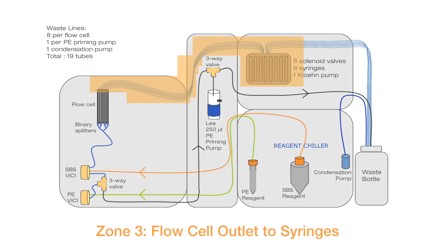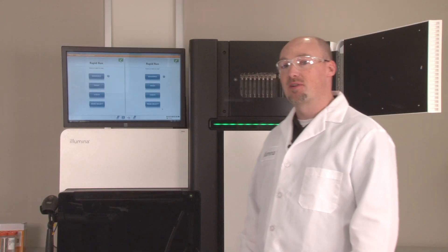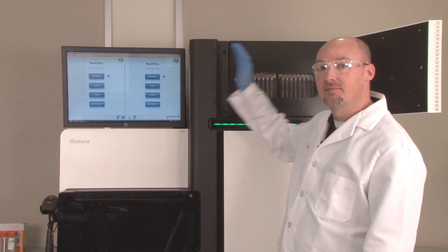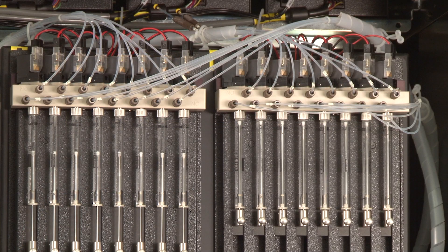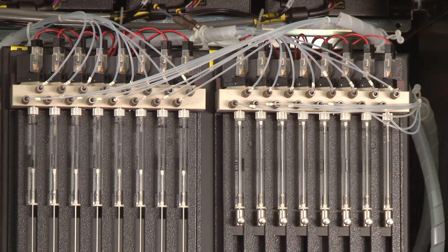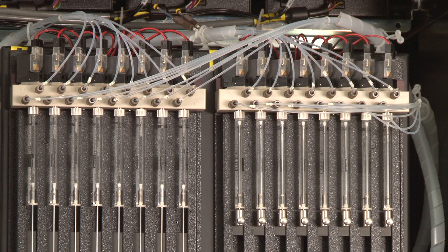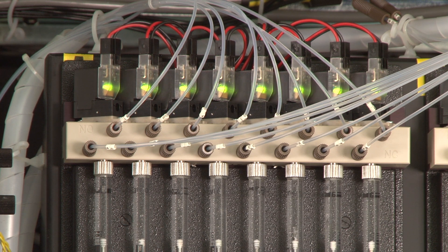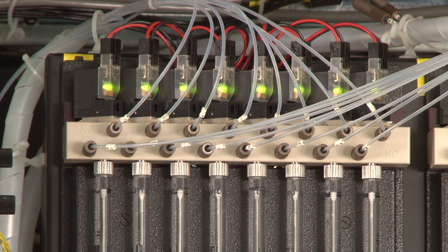If the clog is in a single lane and there is backflow associated with it, then it is likely that the blockage is from the back of the flow cell to the syringe pumps. Monitor the syringe associated with the blockage while pumping and check for large air gaps. If air gaps are seen, perform an instrument wash to push the air to waste gradually. Ensure that the solenoid valves atop the syringe pumps are functioning properly and switch positions — the solenoid should click and change LED indicators when working properly.